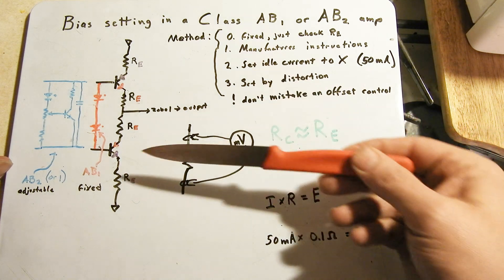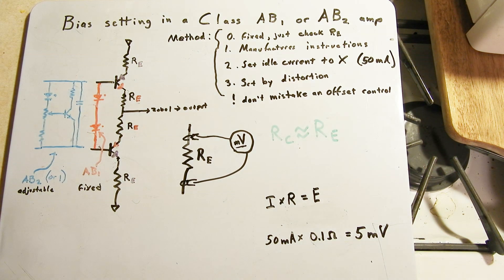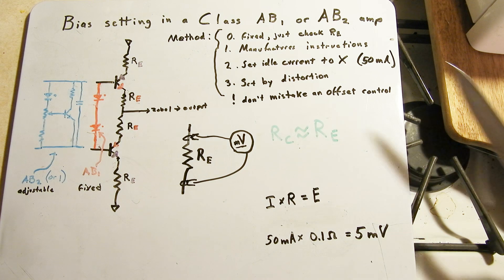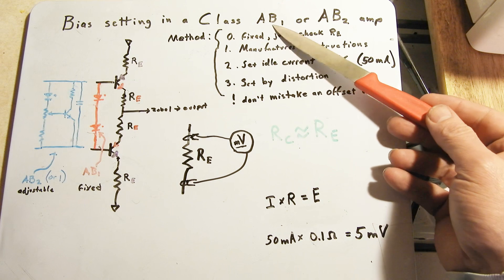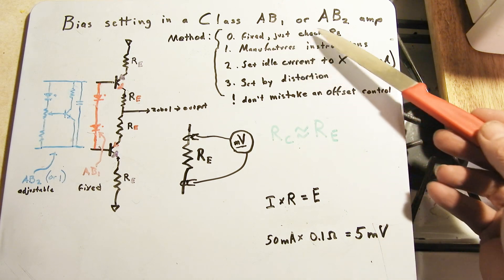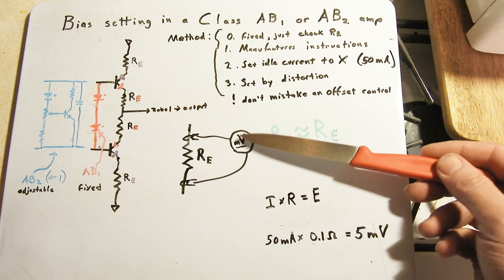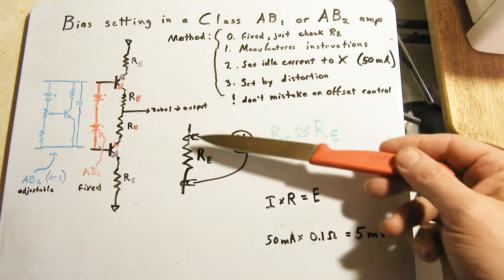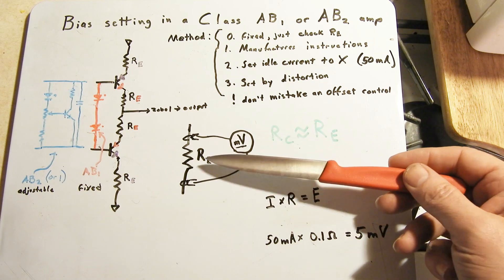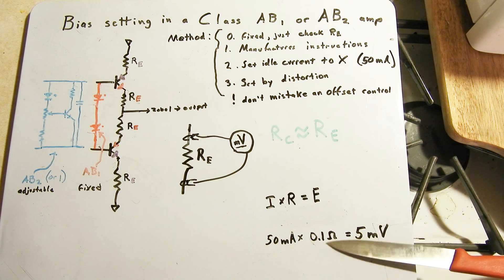So, the method of actually measuring and setting, say you've got an amplifier, you don't know how to set the idle current on it, you at least want to check it. So the method is fixed. If it's a fixed amplifier, it's probably Class AB1. Just check the RE, check the voltage, clamp a voltmeter in millivolt range across the RE resistors. Use that value for RE. Say it was a 0.1 in this example, but you could just manipulate your equation here.